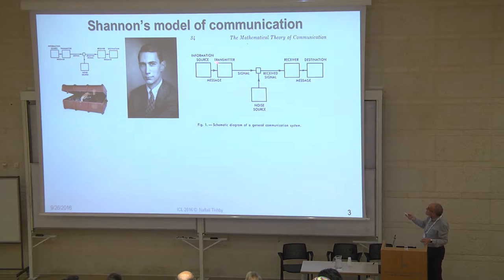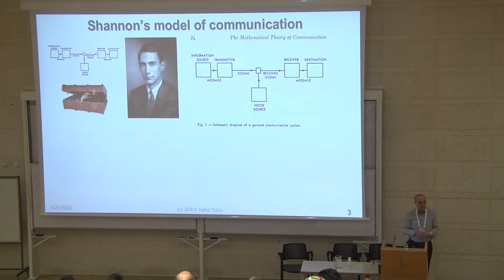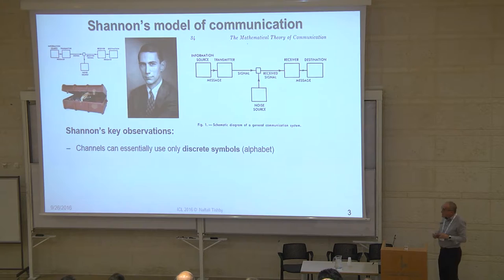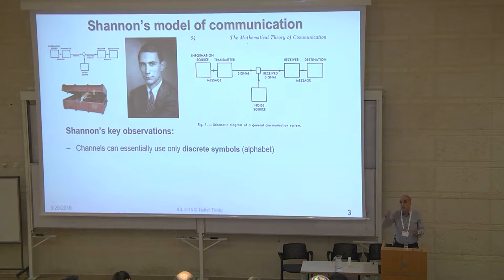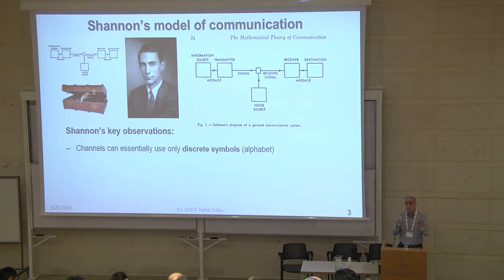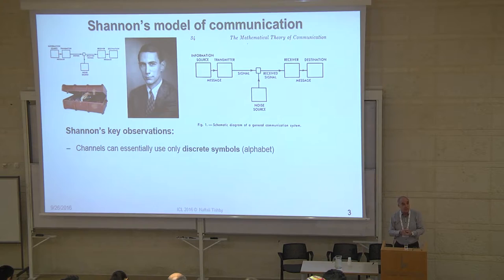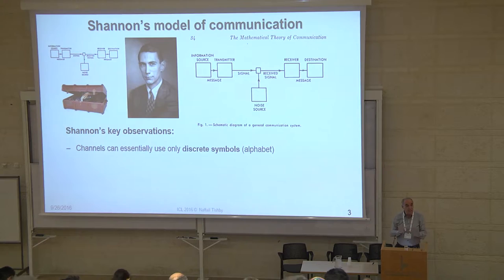Shannon had a clear intuition that the actual physical details of the channel shouldn't be so important — what matters is something else. He had some very fundamental insights: channels essentially use only discrete symbols. Even though channels go through continuous physical things like sound waves or electric currents, there are discrete, distinguishable symbols that are statistically important. This was really the first of what we now call the digital revolution — that people communicate through discrete symbols.